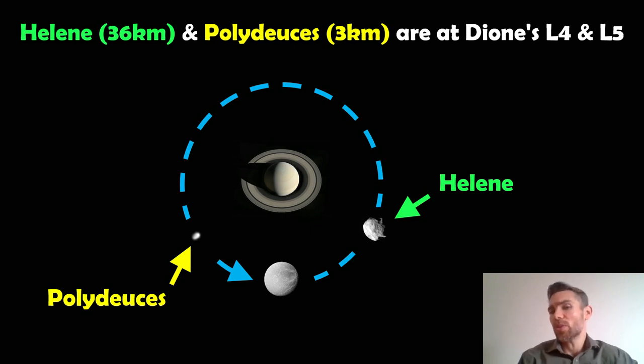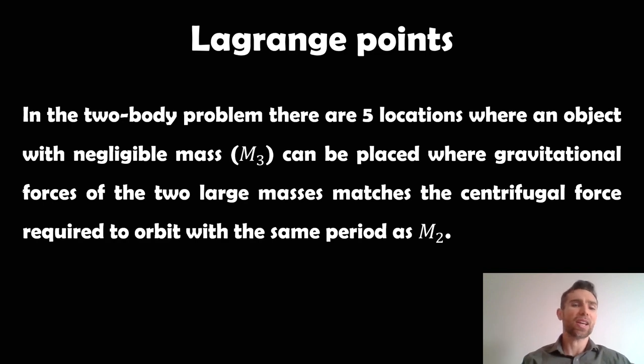And they sit at the L4 and L5 Lagrange points. What are those, what are the Lagrange points? Lagrange points, I've done some separate videos on these. But just to recap, if you haven't come across them before, if you have a two-body problem, so in this case here, it will be Saturn and then its large moon Dione, there are five locations in and around that configuration where you can place a third negligible mass or object where the gravitational forces of the two larger masses, so the moon and Saturn, match the centrifugal force required to orbit with the same orbital period. Basically, they're parking spots for other stuff, for smaller objects, and we do put our own spacecraft in those.